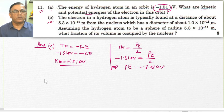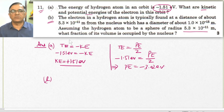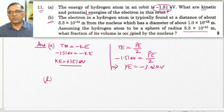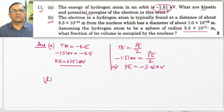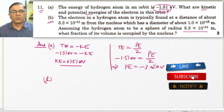In Part B of the problem, it is given that the electron is orbiting around the nucleus. The radius of the orbit is 5.3 × 10⁻¹¹ meters. The diameter of the nucleus is 1.0 × 10⁻¹⁵ meters. We are supposed to find the fraction of the volume occupied by the nucleus.